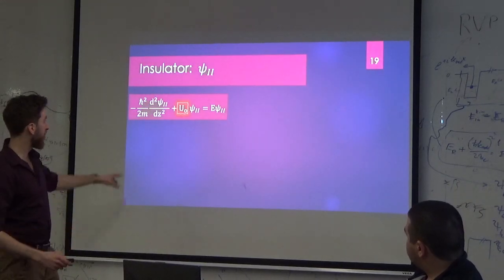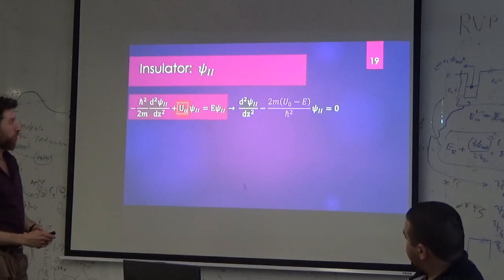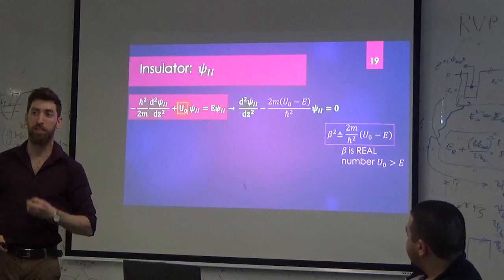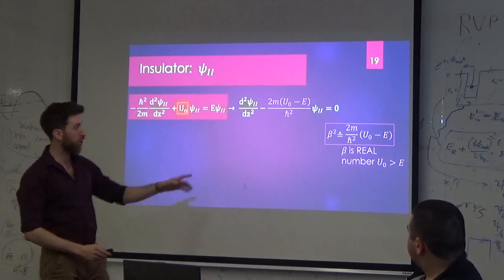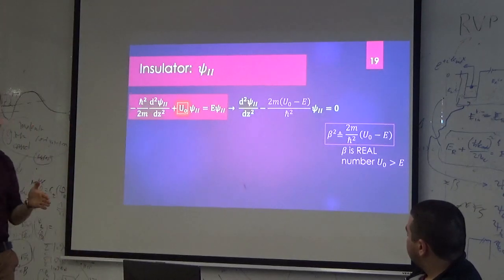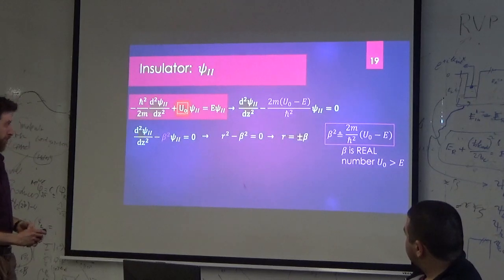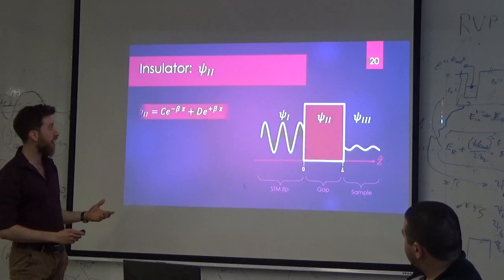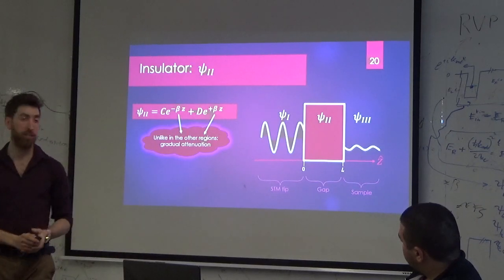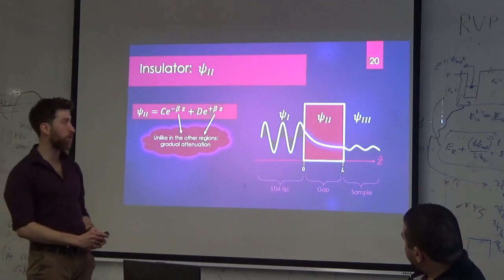In the second part — the barrier region — we introduce beta. It's really important to remember beta, because we're going to use it as we continue the approximation. Beta tells you the difference between the barrier potential and the energy that the electron already has. Continuing to solve the equation in this region, unlike before, we get a decay of the exponent — not a sine or cosine, because this is not complex anymore. This is the solution we expect in the barrier.